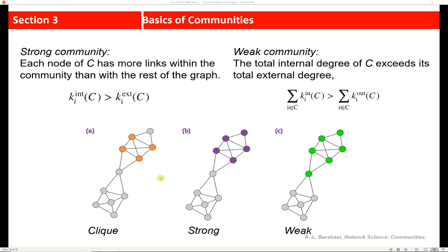The next thing we want to address is the difference between a strong community and a weak community. So in a strong community, we have a case where each node in that community has more links within the community than it does with the rest of the graph. So here we have, if we just focus on these five nodes, a strong community, because they have more links within each other than they do with the rest of the graph.